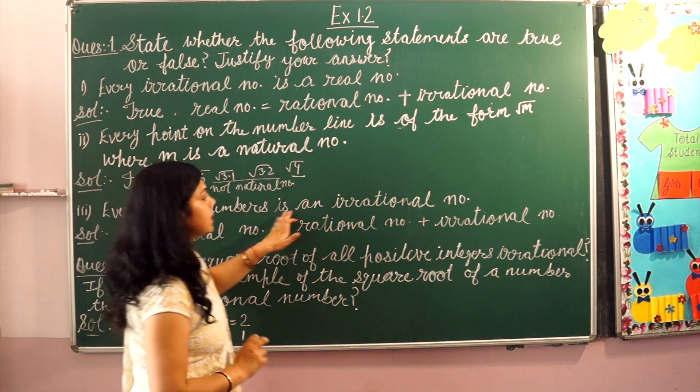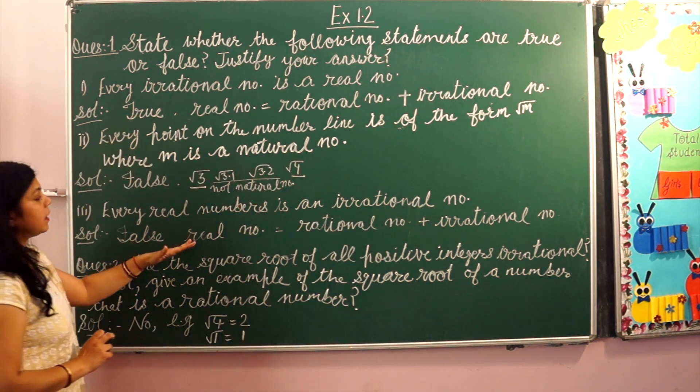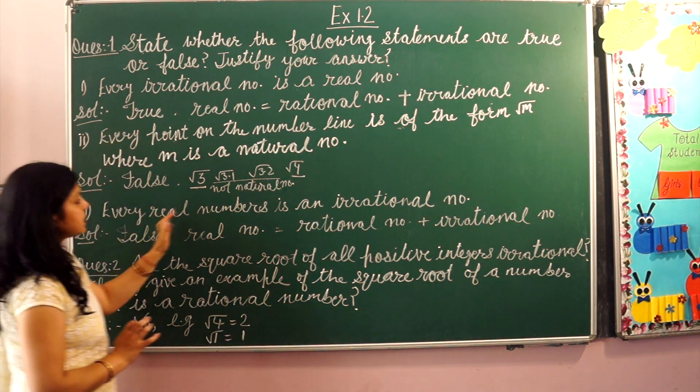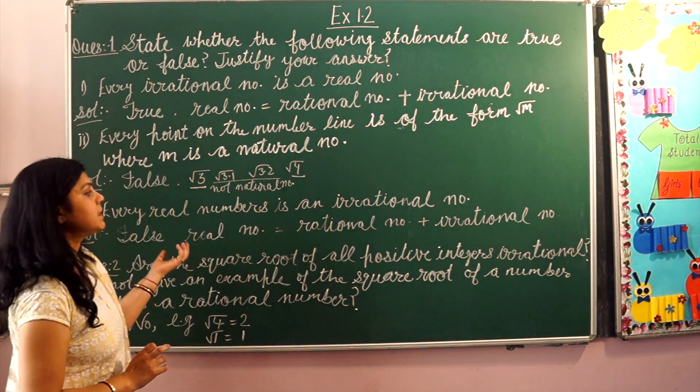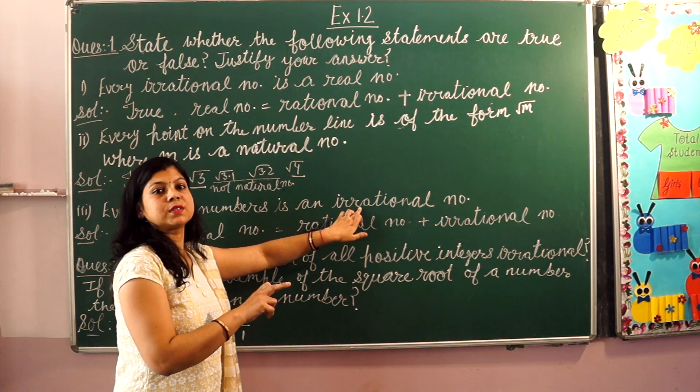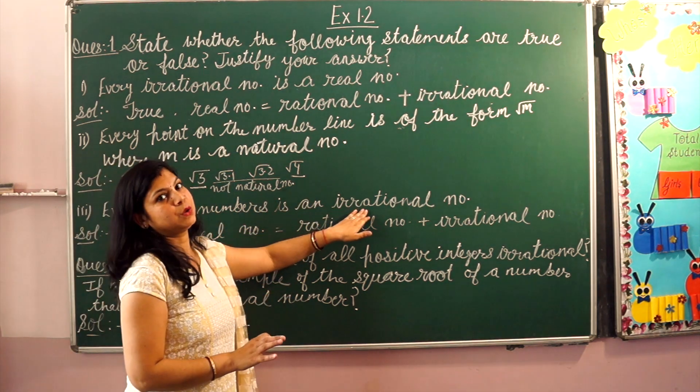Every real number is an irrational number. This is the opposite of the first statement. Can all real numbers be irrational numbers? This is not possible.